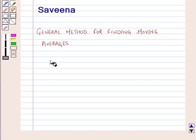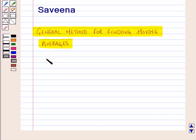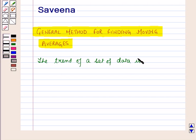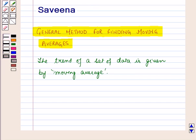Hello and welcome to the session. In this session we will learn about the general method for finding moving averages. We know that the trend of a set of data is given by moving average, and it smooths out the seasonal differences, monthly variations or daily differences.